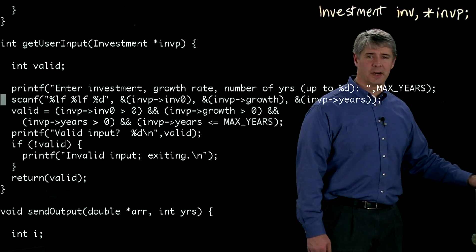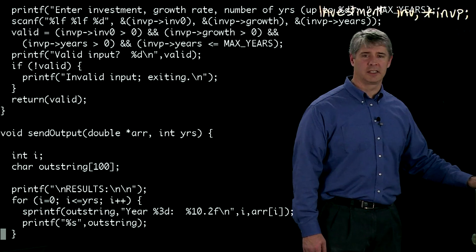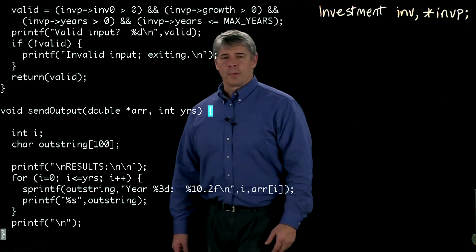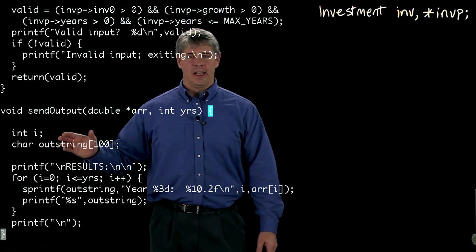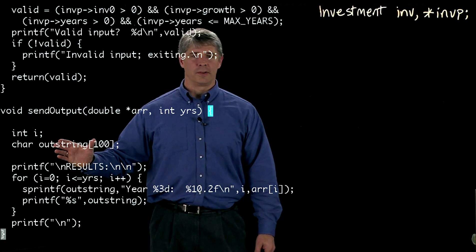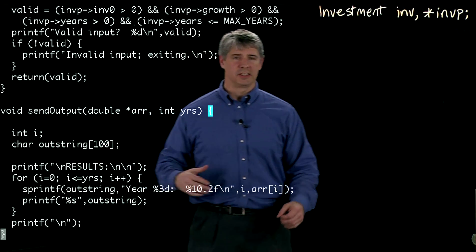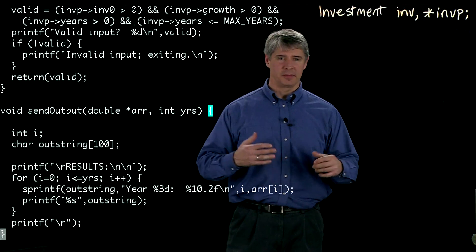Finally, the last function is to send output. This just prints to the screen. We define the local variable i and the local variable outstring, which is an array with a hundred elements. And it's of type char.